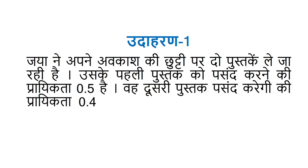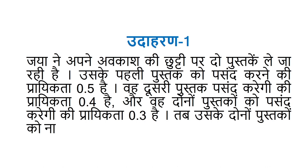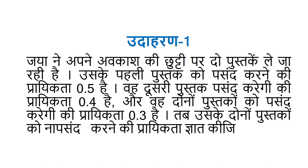तो पहला उधारन इस प्रकार है कि जया ने अपने आवकाश की छुट्टी पर दो पुस्तकों को ले जा रही है। उसके पहली पुस्तक को पसंद करने की प्रायक्ता 0.5 है, और वह दूसरी पुस्तक को पसंद करेगी की प्रायक्ता 0.4 है, और वह दोनों पुस्तकों को पसंद करेगी की प्रायक्ता 0.3 है। (Jaya is taking two books on her vacation. The probability of her liking the first book is 0.5, the probability of liking the second book is 0.4, and the probability of liking both books is 0.3.)